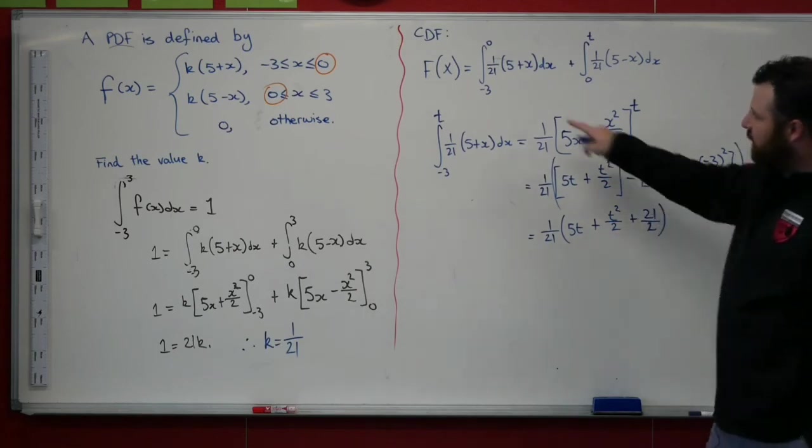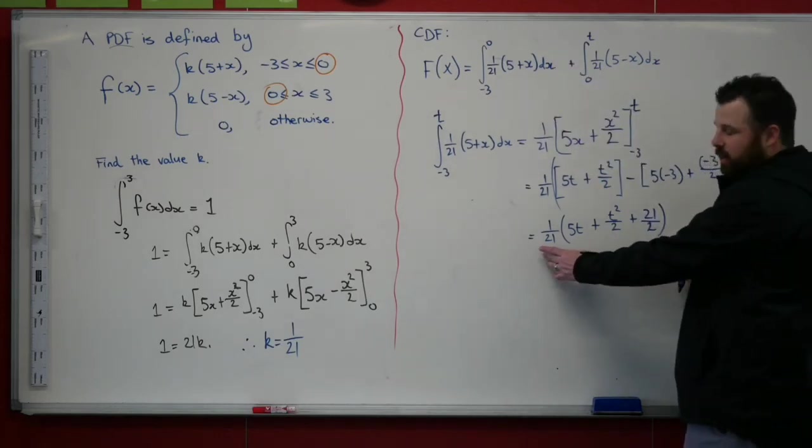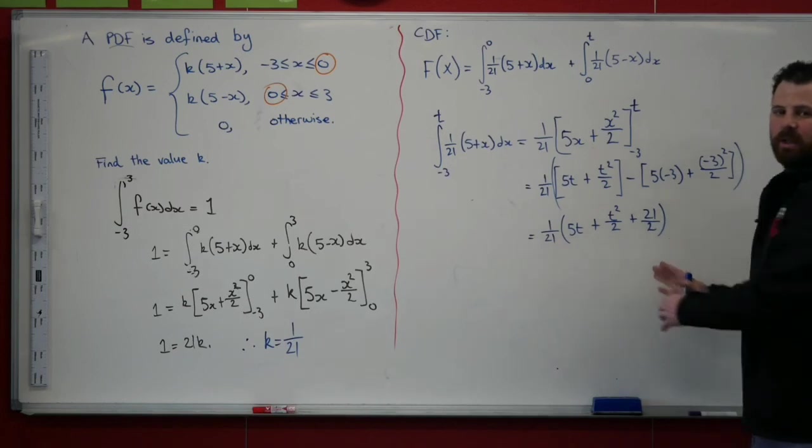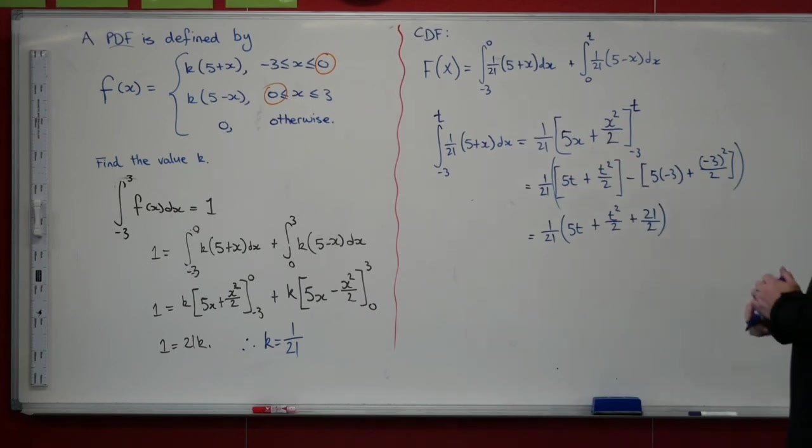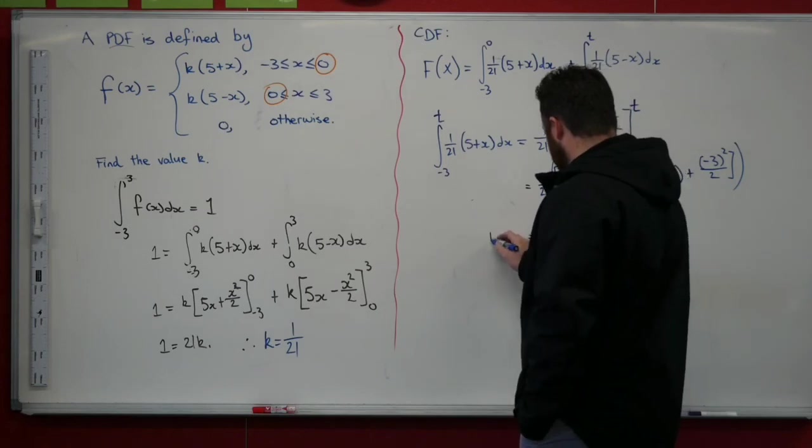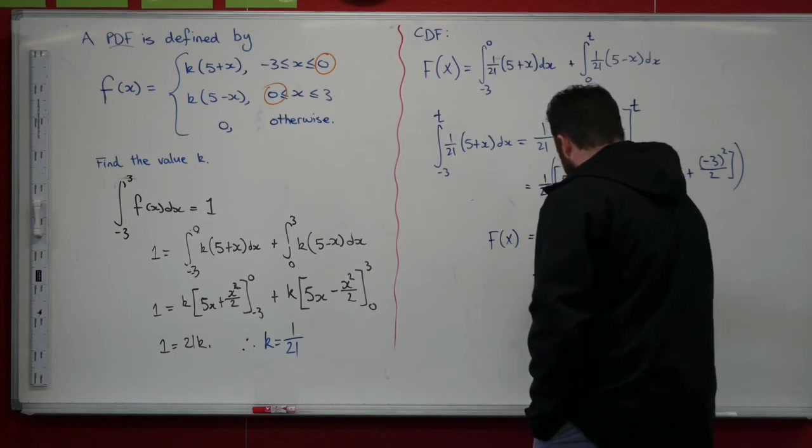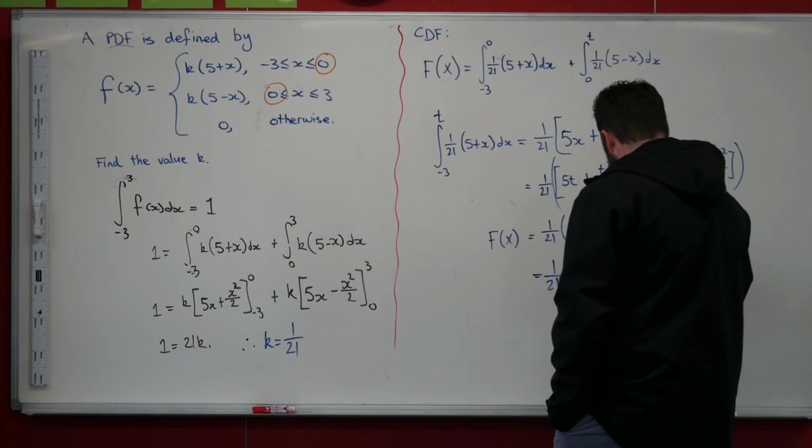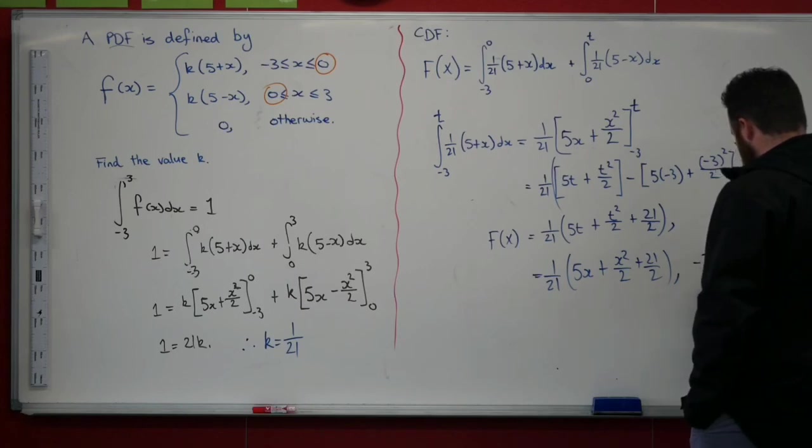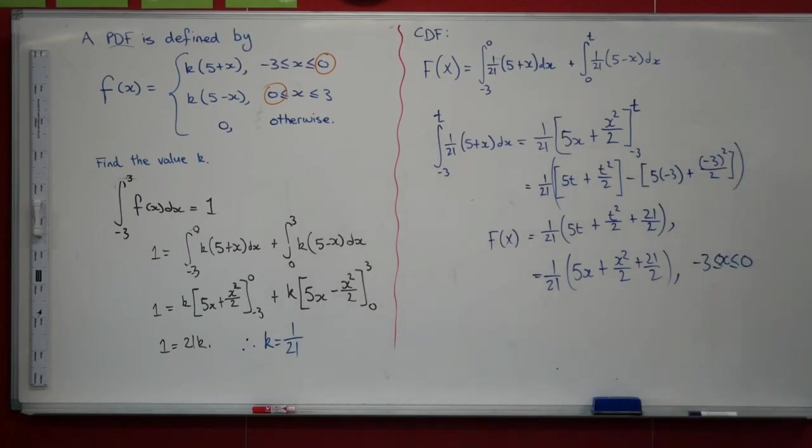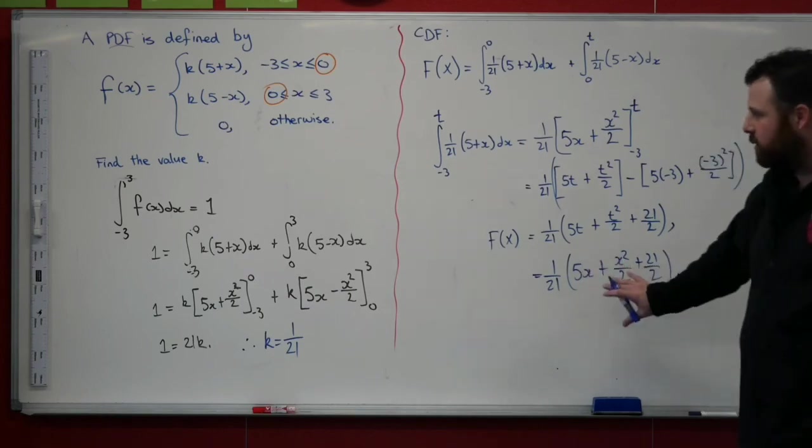Alright, so our CDF is starting to take shape. For our first little area, for the first area under the curve, this is the expression, the equation that's going to give us our area up until any point from any point just in that first section. So that's, let's call that F(x), which is going to equal 1/21(5x + x²/2 + 21/2). And that is F(x) for values of x from minus 3 to 0. That's the equation how to find the area. I'm going to leave that one there. I am going to come back and talk about that one in a second.